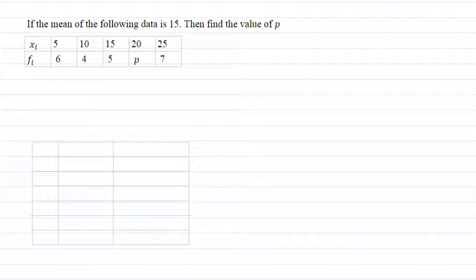Hello everyone, I am your teacher for this question. Let me explain this question to you now. If the mean of the following data is 15, then find the value of P given Xi 5 10 15 20 25, Fi 6 4 5 P 7. Here we have mean given and we have to find the value of P. It is given mean is equal to 15 and this table we have given.